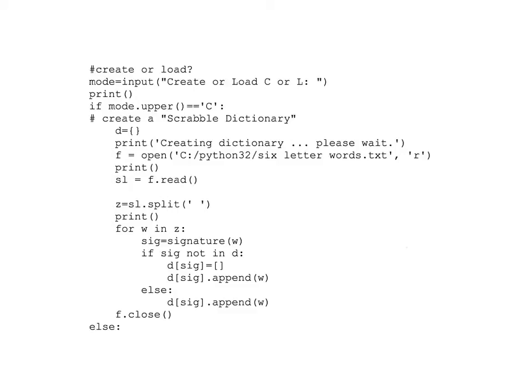What we did was we opened that file for reading. When we open a file, Python gives us a file handle. We call it 'f', and when the file's open, 'f' is the way we're going to access the file. So 'f' has access to this file which has one very long string.